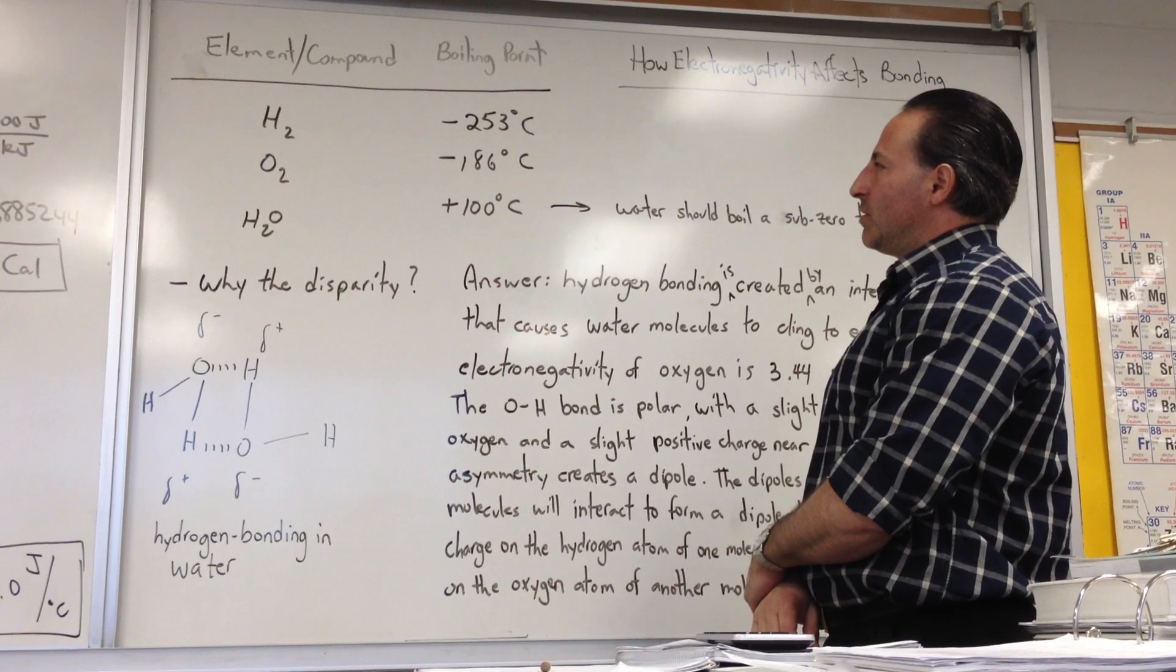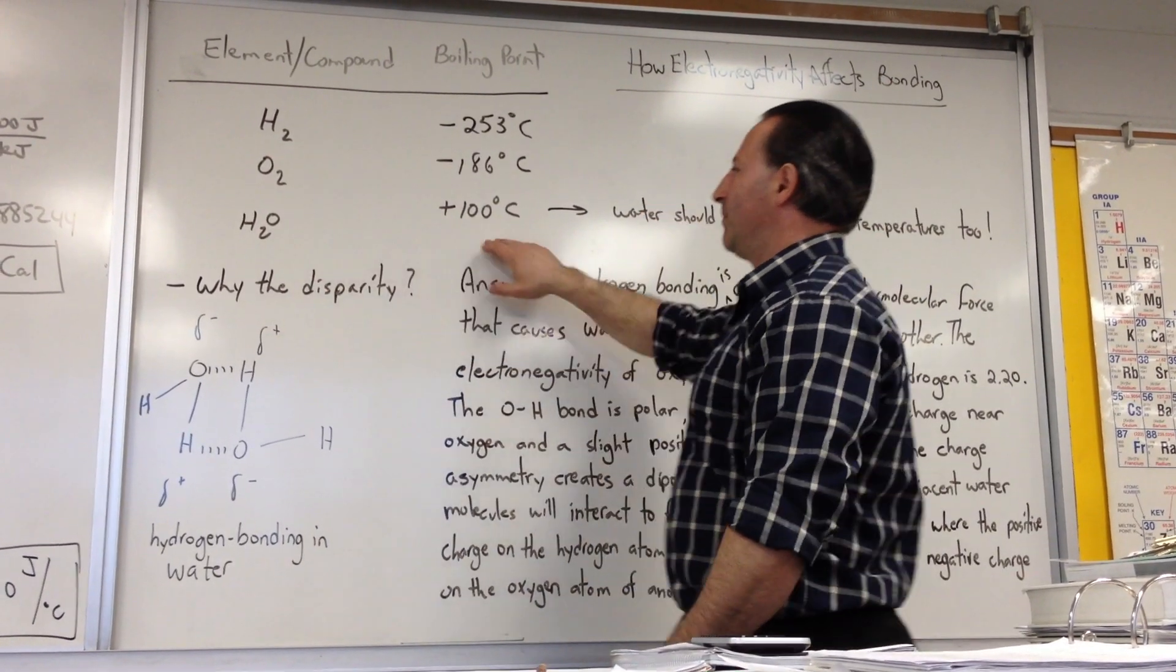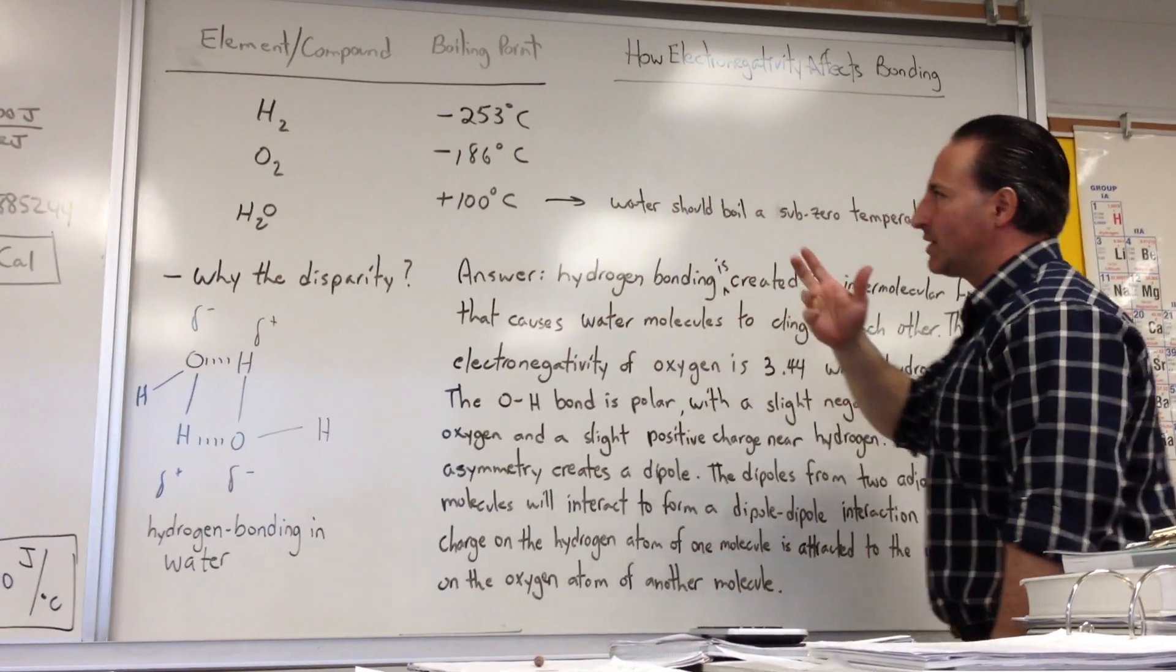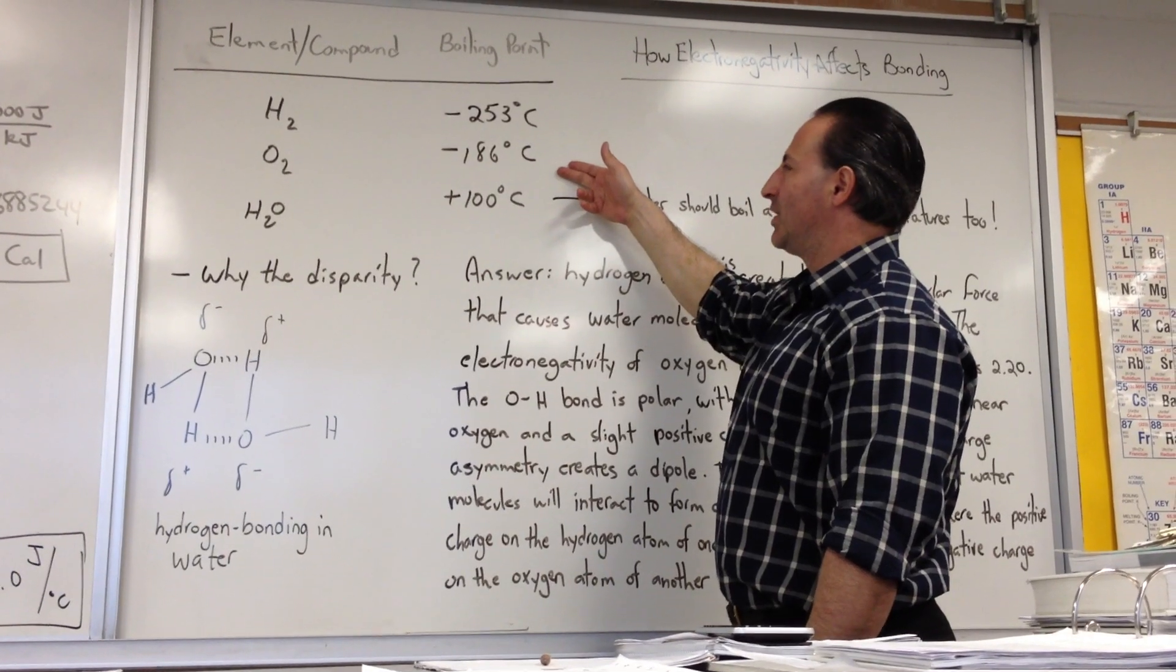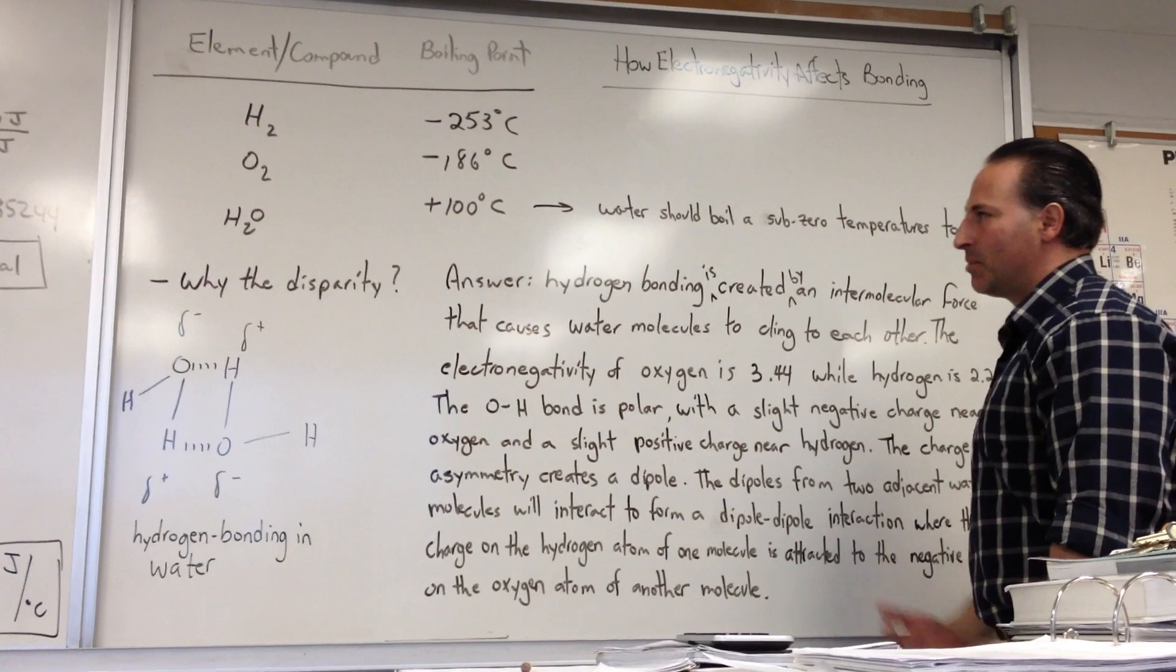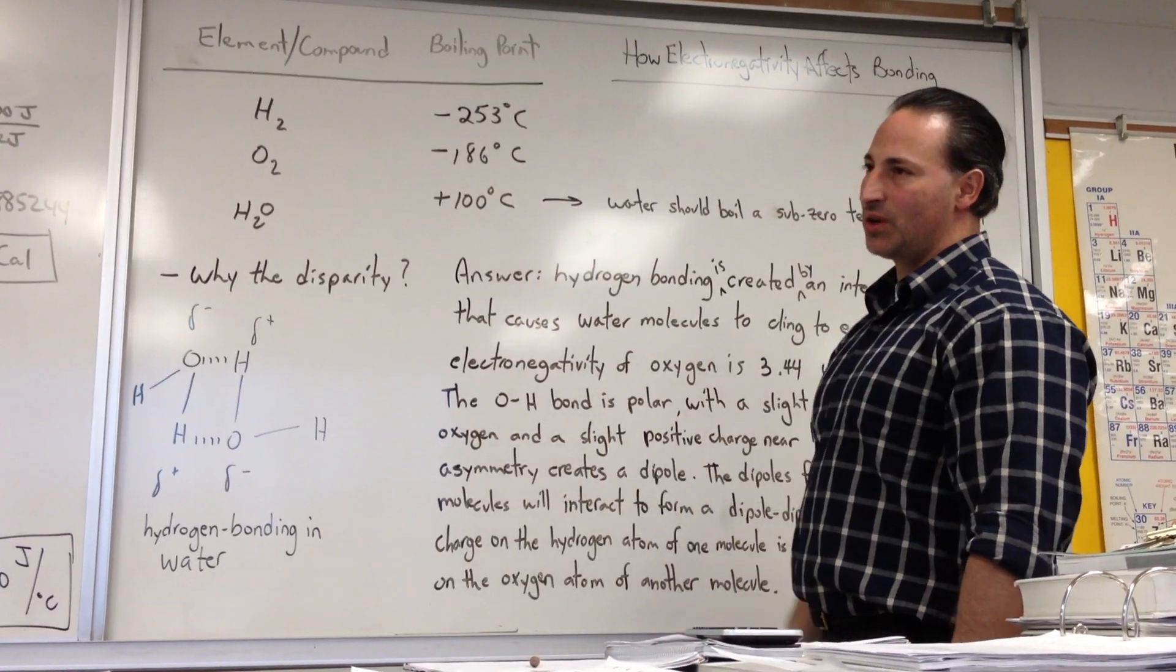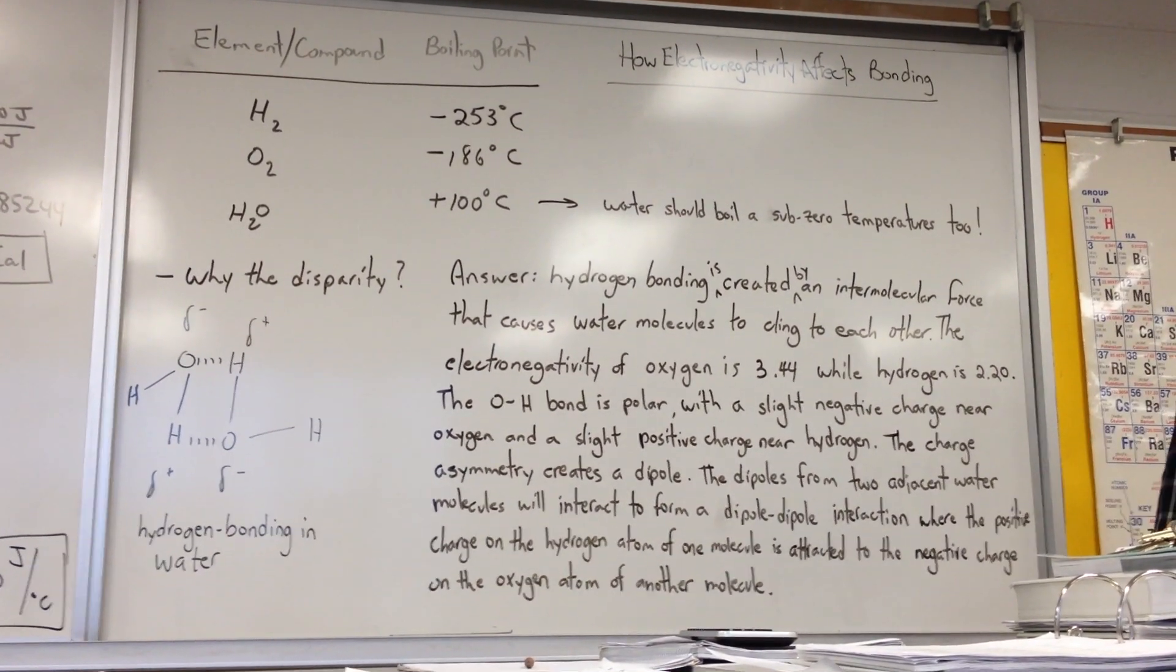The peculiar data point is the boiling point of water. You'll notice that water is made of both hydrogen and oxygen. So you would expect, given that it's made of two substances that boil at sub-zero temperatures, that it too would boil at a sub-zero temperature. But we all know that water boils at 100 degrees Celsius, which is over 200 degrees removed from the boiling point of the gases that compose it.